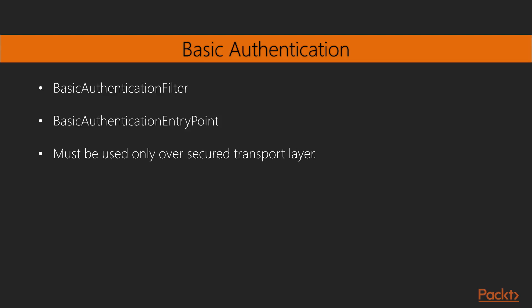For Basic Authentication there is a BasicAuthenticationFilter and a BasicAuthenticationEntryPoint, and it must be used over a secure transport layer. The BasicAuthenticationFilter is responsible for processing the Basic Authentication credentials passed in the HTTP header by the user agent. That filter needs to be added to the Spring Security filter chain. The authentication manager authenticates each request, and on failure the entry point asks the user to provide credentials again. On success, the authentication object is added to the security context as usual.